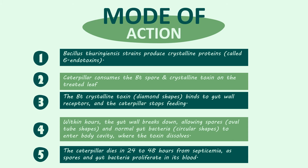Let's take a look at the mode of action of Bacillus thuringiensis. Firstly, Bacillus thuringiensis strains produce crystalline proteins called delta-endotoxins. Later, a caterpillar consumes Bacillus thuringiensis spores and crystalline toxin on the treated leaf. After that, the Bacillus thuringiensis crystalline toxin in diamond shape binds to the gut wall receptor and the caterpillar stops feeding. Within hours, the gut wall breaks down, allowing spores (oval tube shape) and normal gut bacteria (circular shape) to enter the body cavity where the toxin dissolves. Eventually, the caterpillar dies in 24 to 48 hours from septicemia as spores and gut bacteria proliferate in its blood.